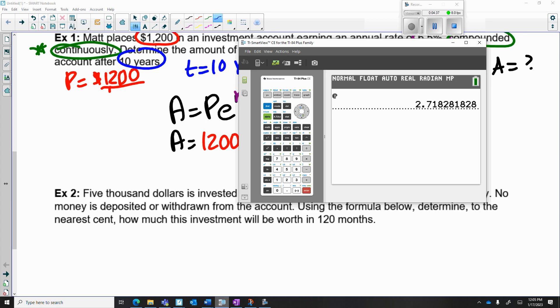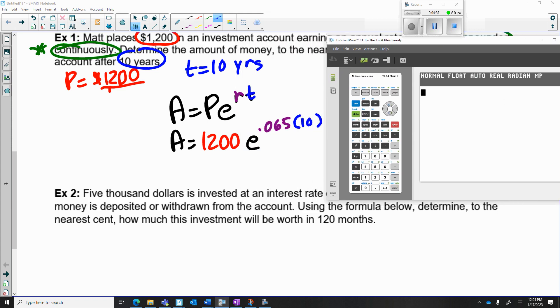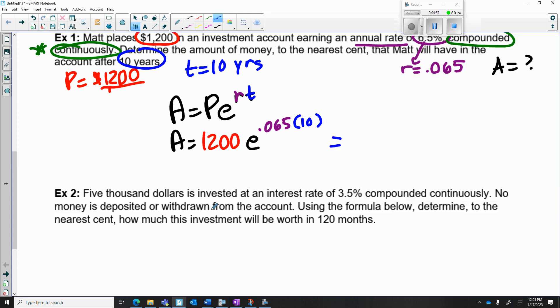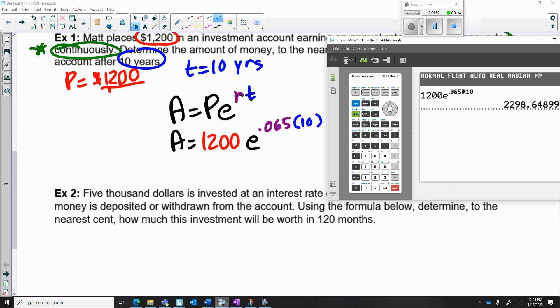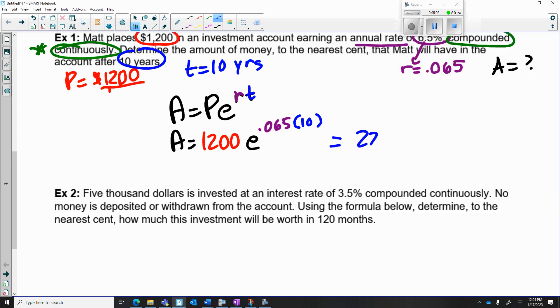Take out your calculator, go to the home screen, type in exactly what you see: 1200, e (second division sign), carat 0.065 times 10. You can either write times or put two parentheses, but the calculator will work it out for you. You're going to round this to the nearest cent, so that's two decimal places. We have $2298.65. That's it. He made a bunch of money with a 6.5% rate, which is really good - that's probably not going to happen in real life.